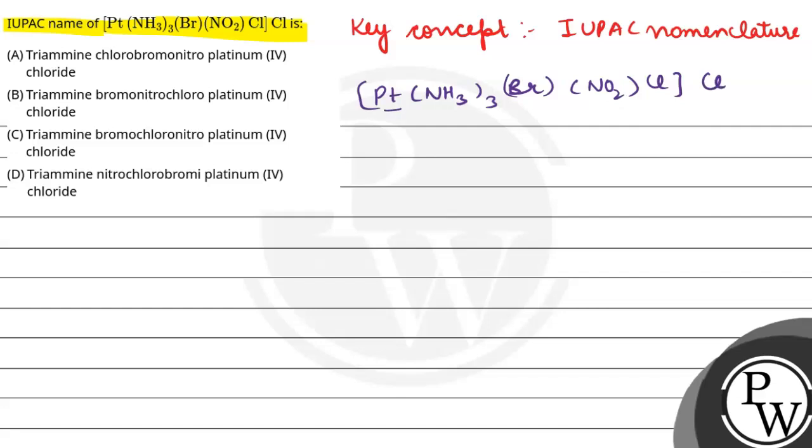First of all, we need to determine platinum oxidation state. Let's say platinum is x. Ammonia is zero. Bromine is minus 1, NO2 is minus 1, plus chlorine is minus 1. And overall, this complex is plus 1.